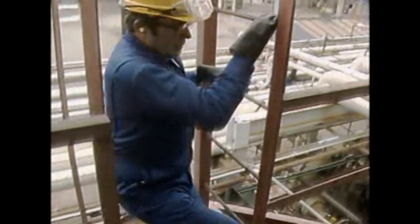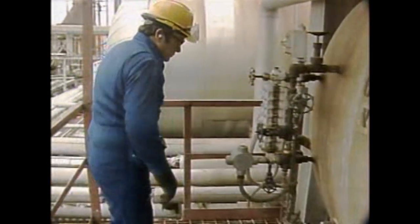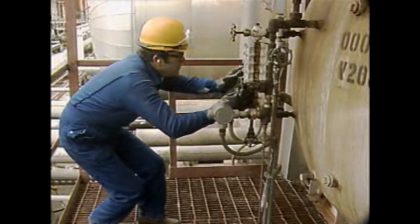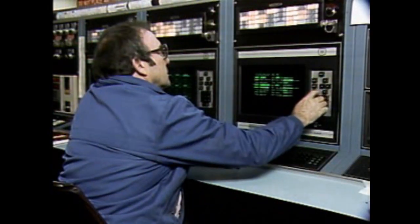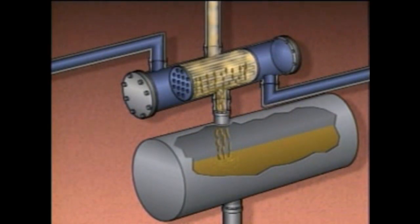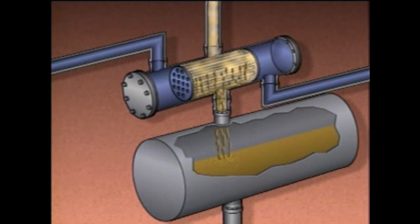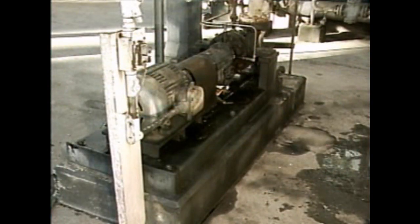When a condenser is up and running, operators regularly monitor its performance. One important check is the level in the receiver, which can be checked using a sight glass or from a control room display. If the receiver level is too high, the condenser shell could flood, reducing efficiency. If the level gets too low, equipment downstream could be damaged — for example, the distillate pump could cavitate, preventing proper operation and damaging the pump. A controller on the receiver automatically maintains level, so an abnormal level could indicate a problem with the controller. A low level could also indicate a problem with the cooling water flow.